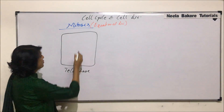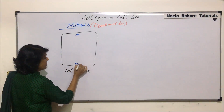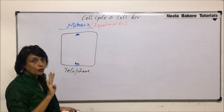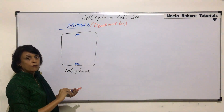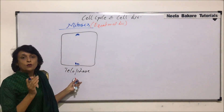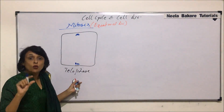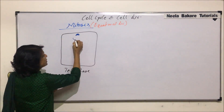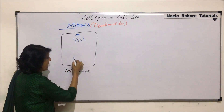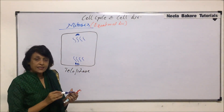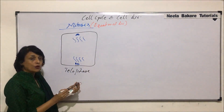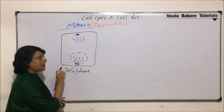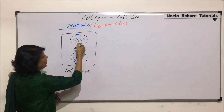What happened in anaphase was that the chromosomes already moved towards the opposite poles. We started with four chromatin fibers. In prophase the chromatin fibers condensed to appear like chromosomes; here they would decondense and stretch to form threads again. So we would see four threads towards one pole and four threads towards the other pole.